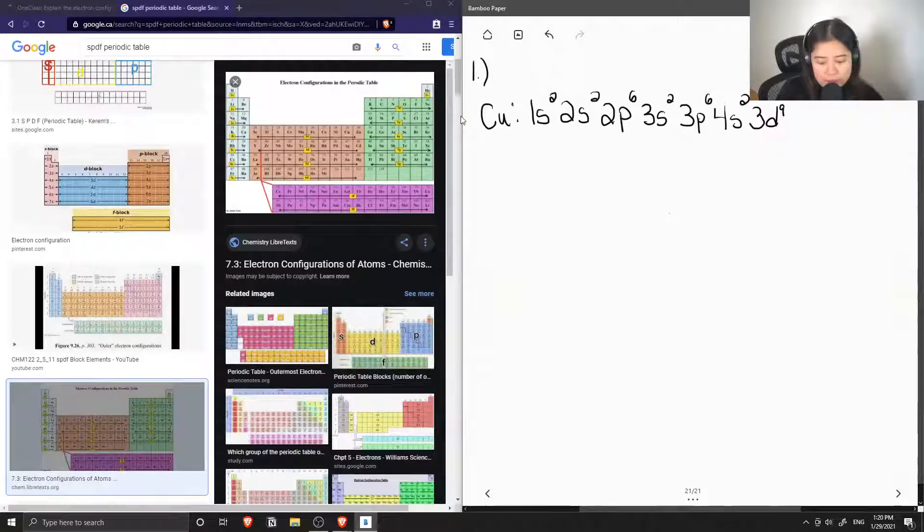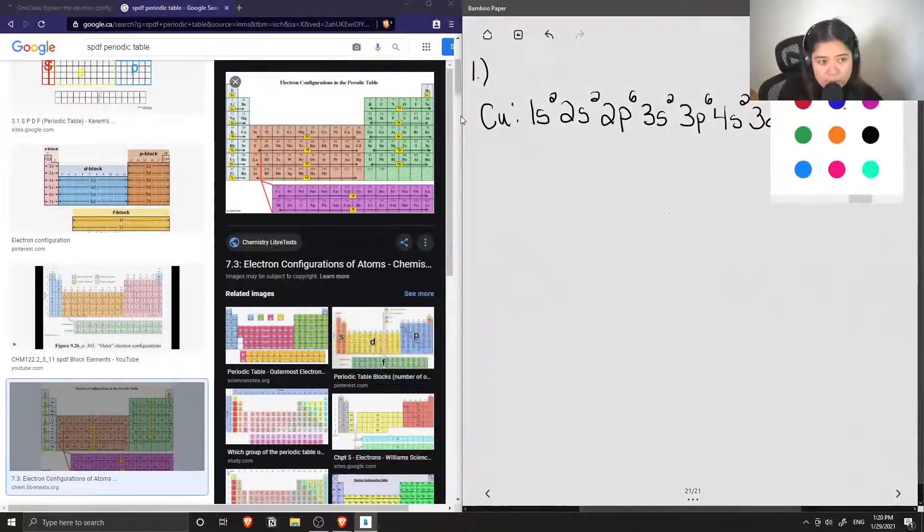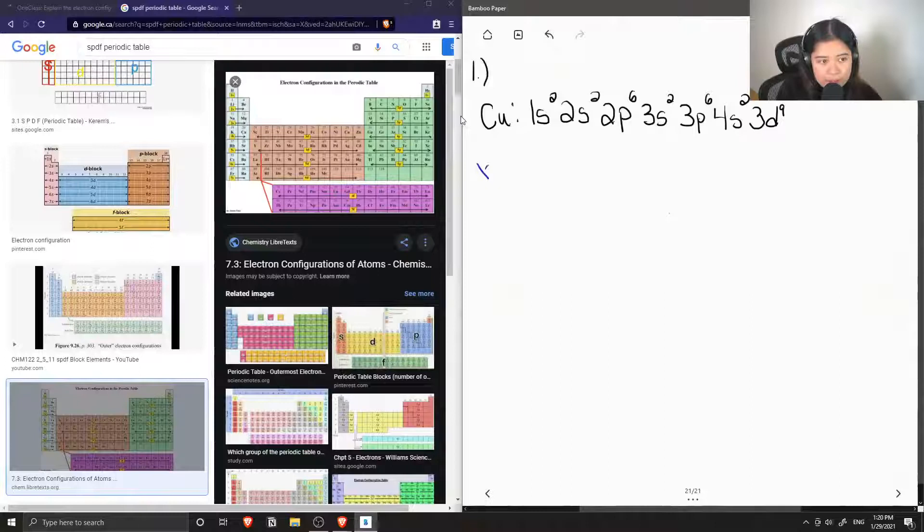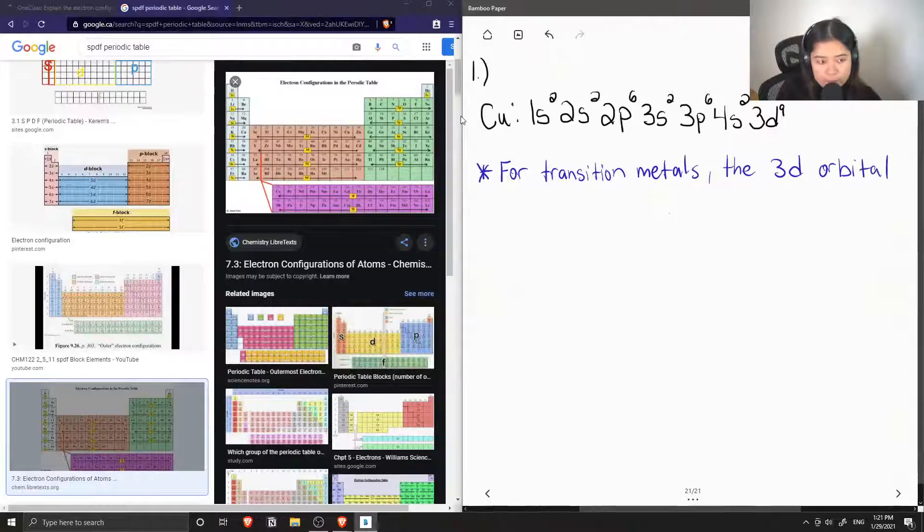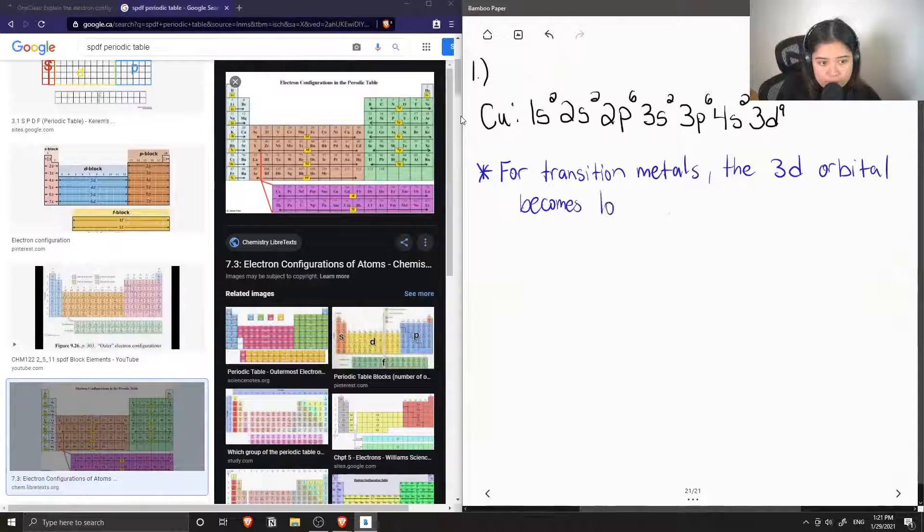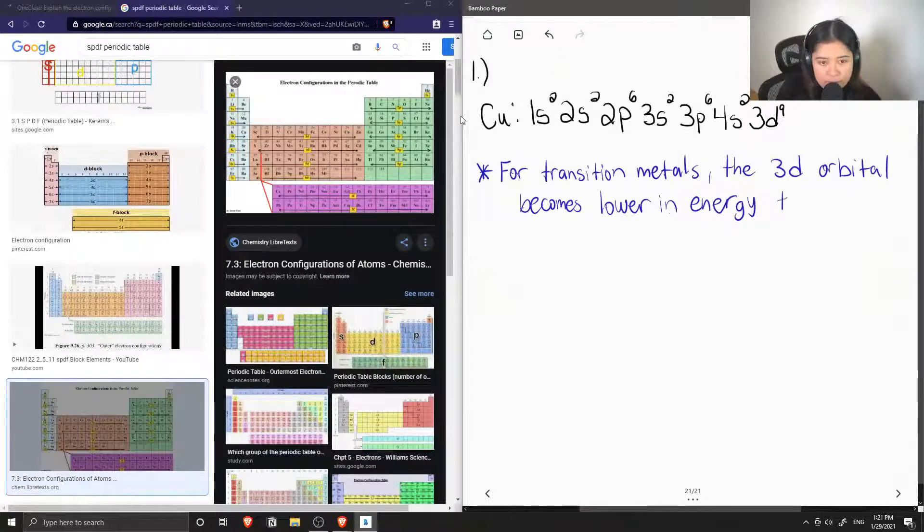But typically, the 3D orbital becomes lower in energy than the 4S orbital when we have transition metals. And it's more likely that we are going to fill in this D orbital than we are to fill in the 4S orbital. So I'm just going to add a note here that for transition metals, the 3D orbital becomes lower in energy than 4S.